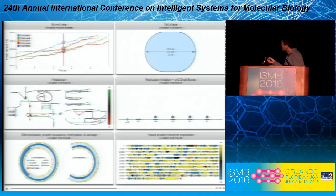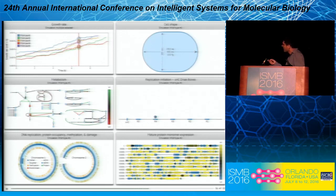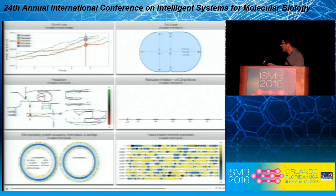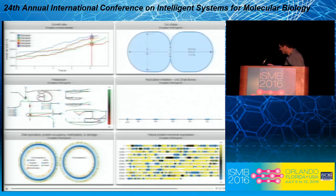The top right illustrates the predicted size and shape of the cell as it grows, elongates, and divides. The middle left panel illustrates the predicted metabolism. The middle right panel illustrates the size of a protein complex that forms at the origin to separate the strands of the chromosome to initiate replication. At the bottom, we've indicated where proteins are bound to the chromosome throughout the cell cycle, and at the bottom right, the expression levels of protein monomers throughout the cell cycle.